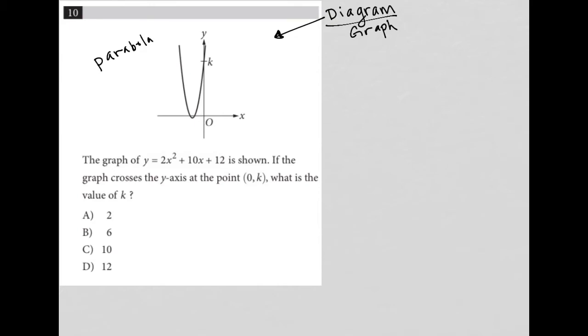The vertex is here. We don't know exactly where that is, but it's definitely on the negative side of the x-axis, and it also dips into the negative for the y-axis. And we have a y-intercept for this parabola at k, this k value, which we also don't know the value of.